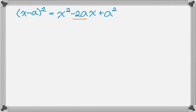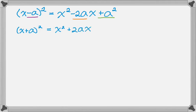What you might notice is that negative 2a is twice whatever that was, and that right there is the square of the last thing. Similarly, if we had x plus a squared, we get plus 2ax and then a squared. So the middle term is always 2a — twice whatever that value was. We're going to use that idea to complete the square and reverse course.